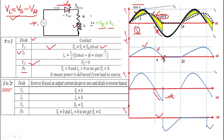From β to 2π, the output current i₀ decays to zero, so the diode becomes reverse biased and acts as an open circuit. With i₀ equal to zero, V₀ equals zero, and the supply voltage Vs appears entirely across the diode, so Vd = Vs. Power P₀ = V₀ × i₀, and since both V₀ and i₀ are zero, P₀ equals zero.